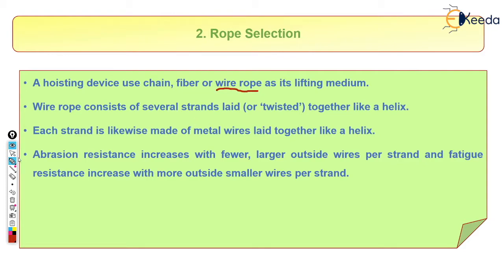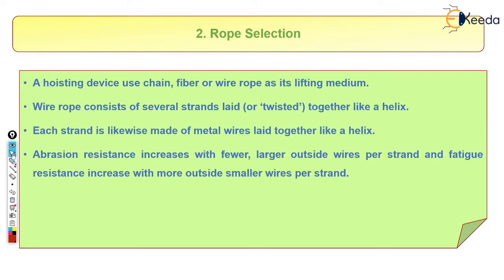In this hoisting mechanism we are going to use a wire rope as a lifting medium. A wire rope consists of several strands — twisted portions — which are made up of small metal wires arranged in a helical shape. The use of metal wires increases abrasion resistance, which is why we use metal wires instead of normal fiber or plastic wires in hoisting mechanisms.